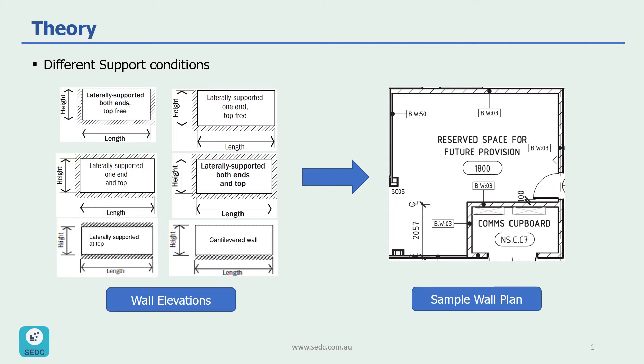Here you can see the different six support conditions that I just mentioned. For example, if you look at this wall elevation in here, the first one is showing two vertical edge supports, but there is no support on top. So I'm highlighting the support with yellow highlight.